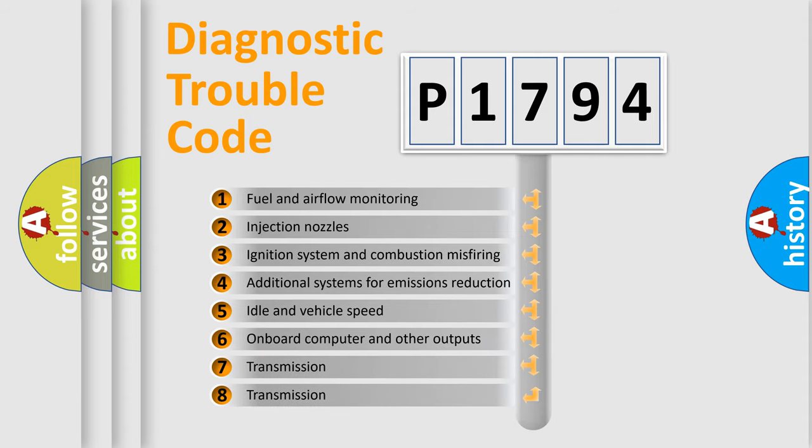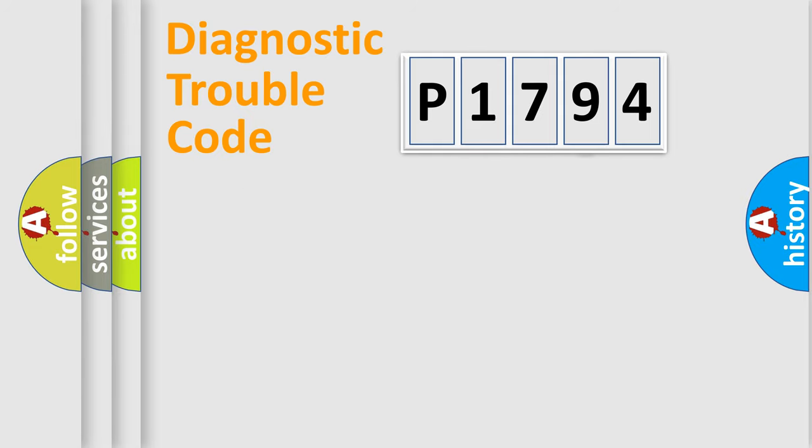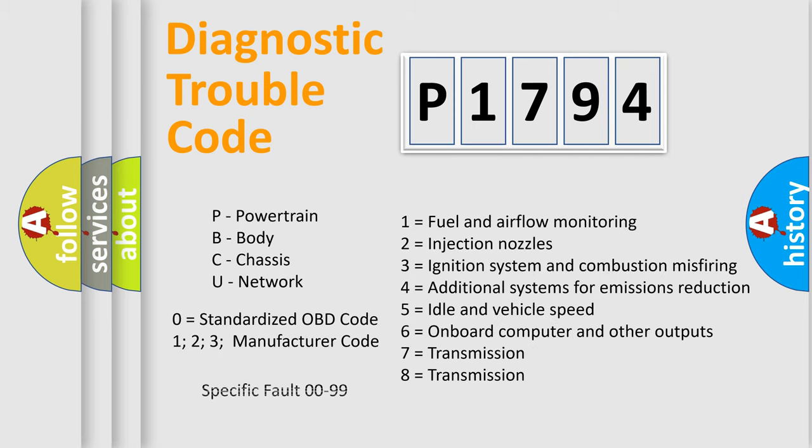The third character specifies a subset of errors. The distribution shown is valid only for the standardized DTC code. Only the last two characters define the specific fault of the group. Let's not forget that such a division is valid only if the second character code is expressed by the number zero.